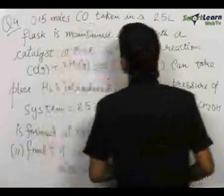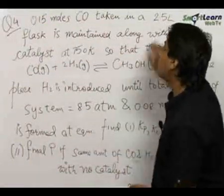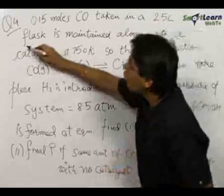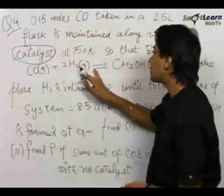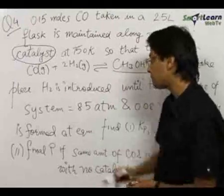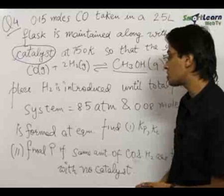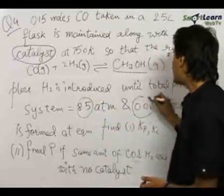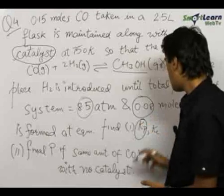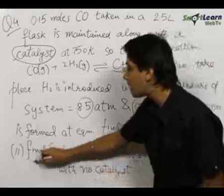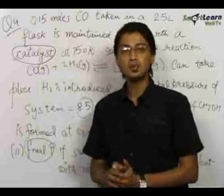The next problem is a chemical equilibrium problem. We are given that 0.15 moles of carbon monoxide are taken in a 2.5 liter flask, maintained with a catalyst at 750 Kelvin, so that the equilibrium reaction CO + H₂ → CH₃OH can take place. Hydrogen gas is introduced until the total pressure becomes 8.5 atmospheres and 0.08 moles of methanol is formed at equilibrium. We need to find Kp, Kc, and the final pressure if the same amounts of CO and H₂ are taken but no catalyst is present.